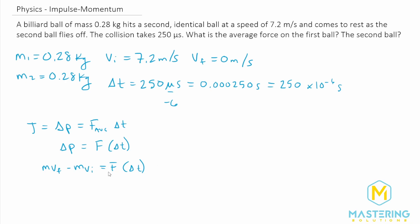So now let's isolate F because that's what we're looking for. So we have force average is equal to, we're going to be dividing over T of course. So MV final minus MV initial all divided by the change in time.